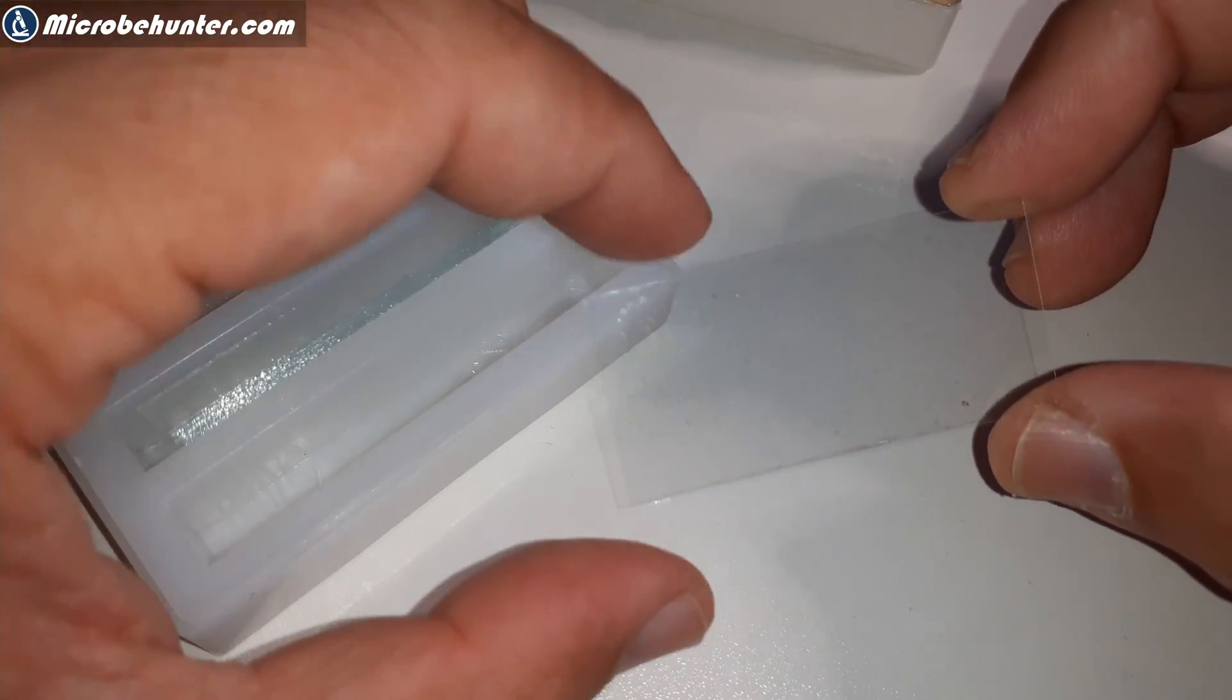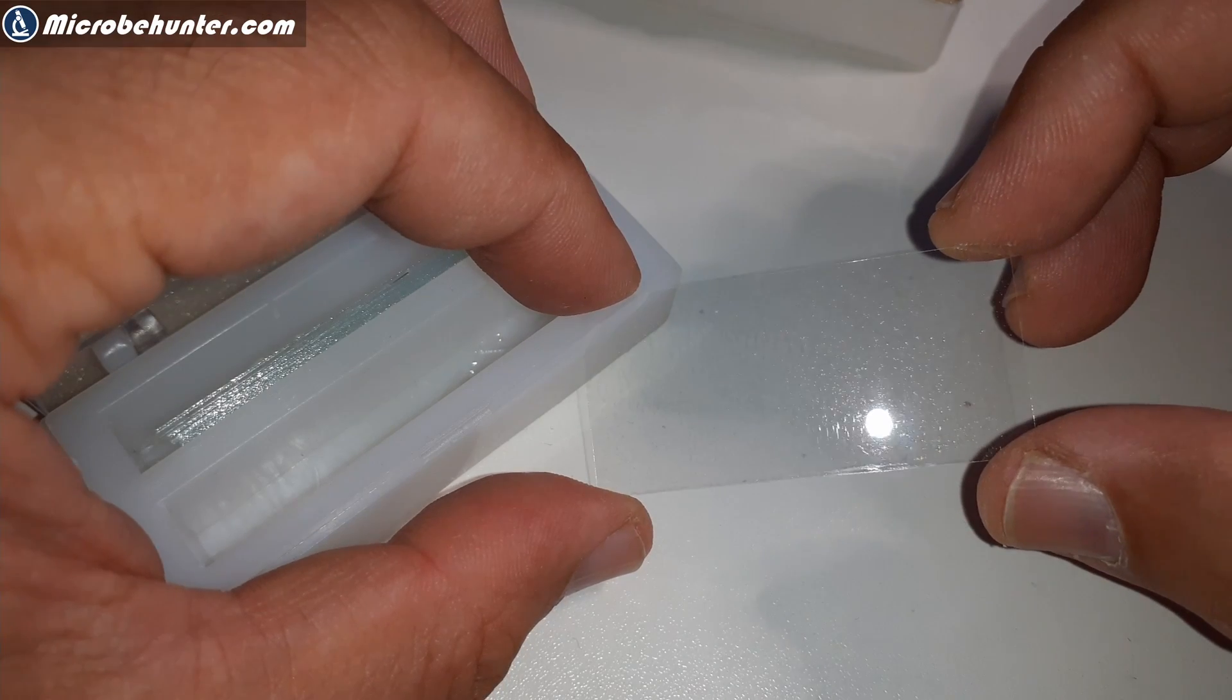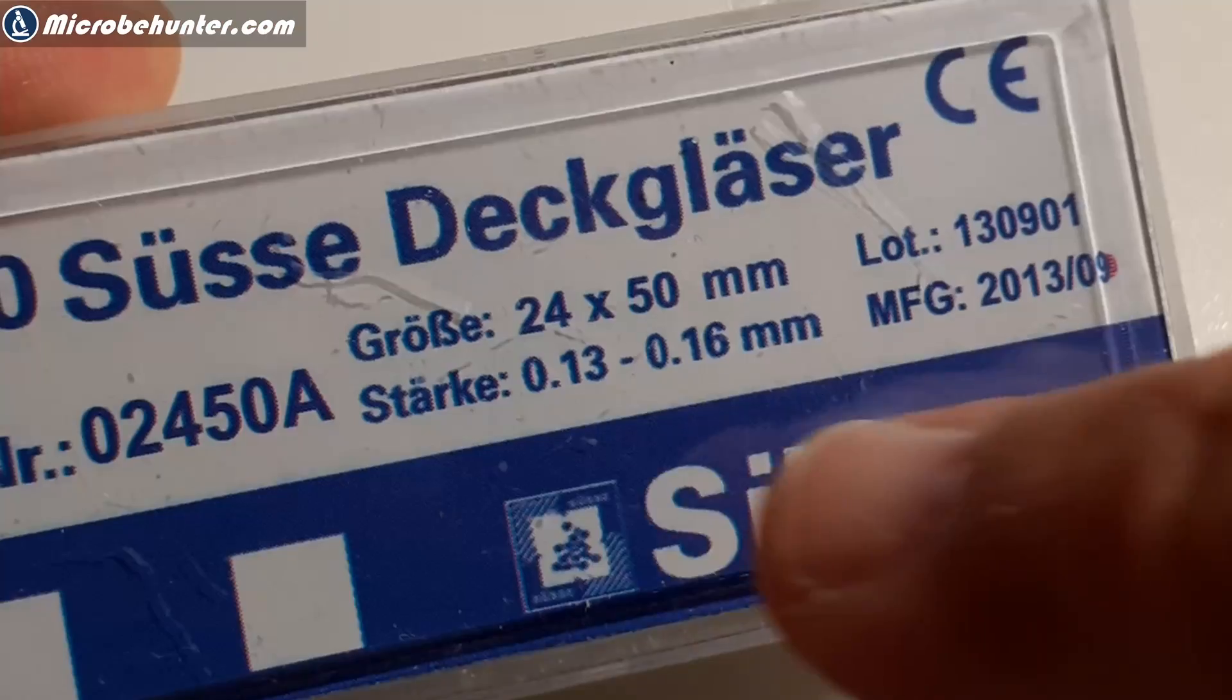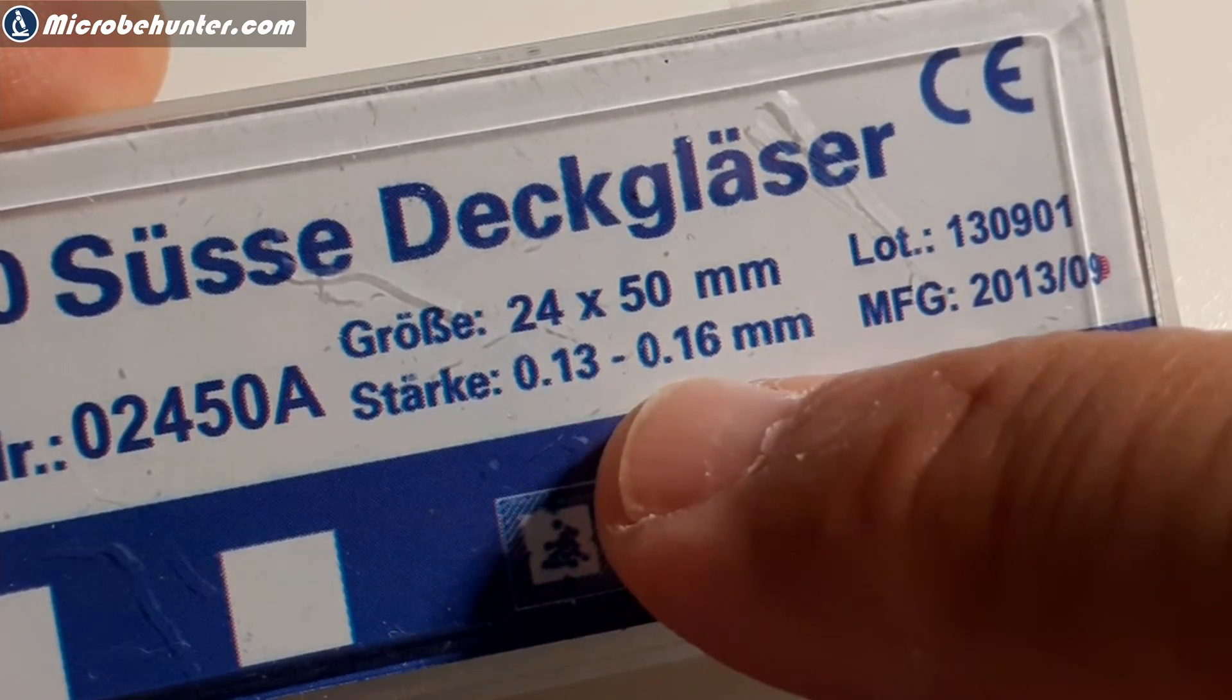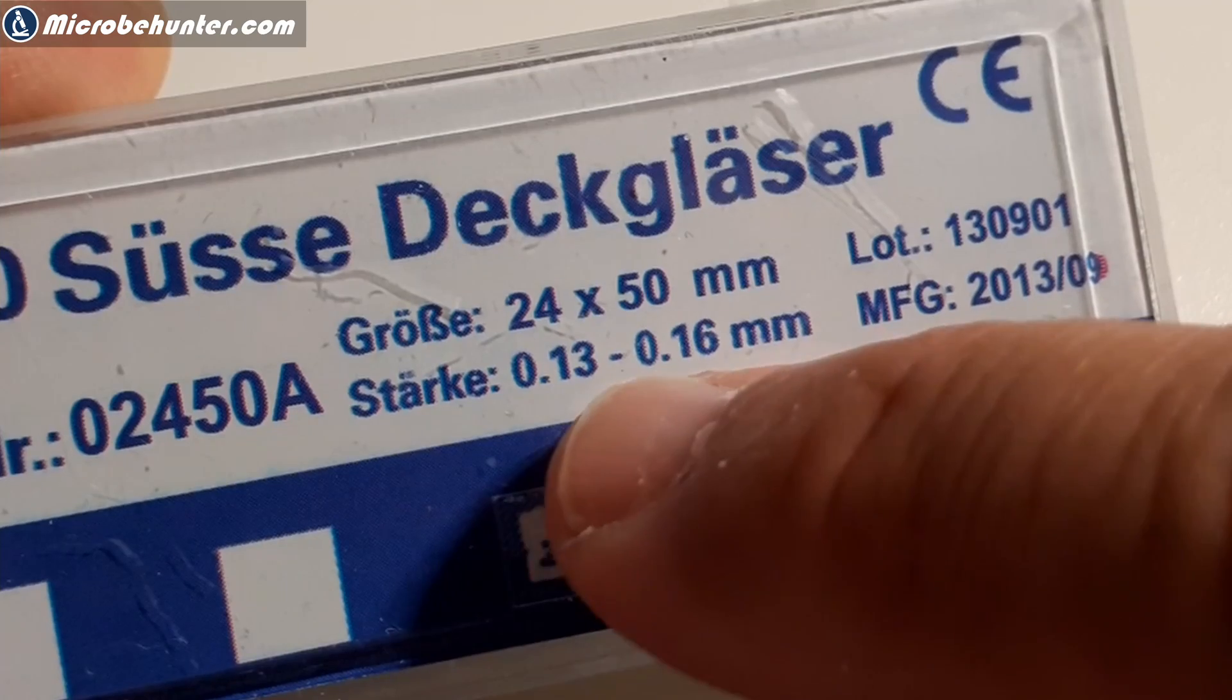These are pretty large cover glasses, and I also reuse them. Here you can see again it's not quite clean—you have to dry wipe them as well. I like to use them a lot. The thickness is 0.13 to 0.16 millimeters, and the size is 24 times 50 millimeters.